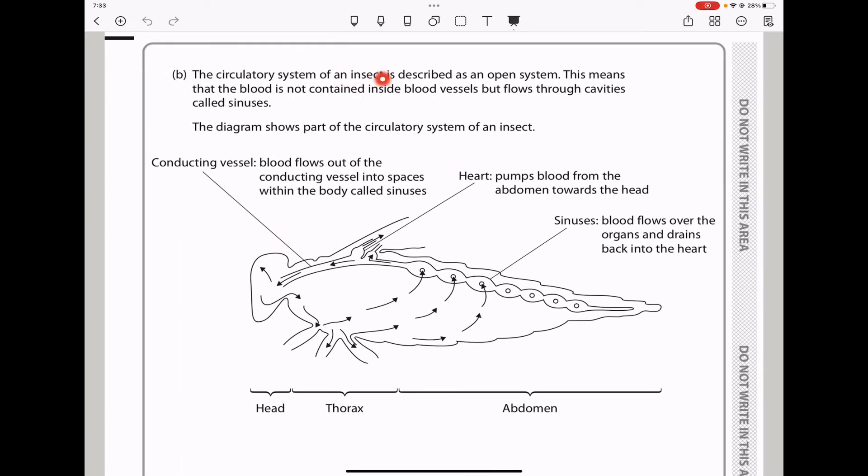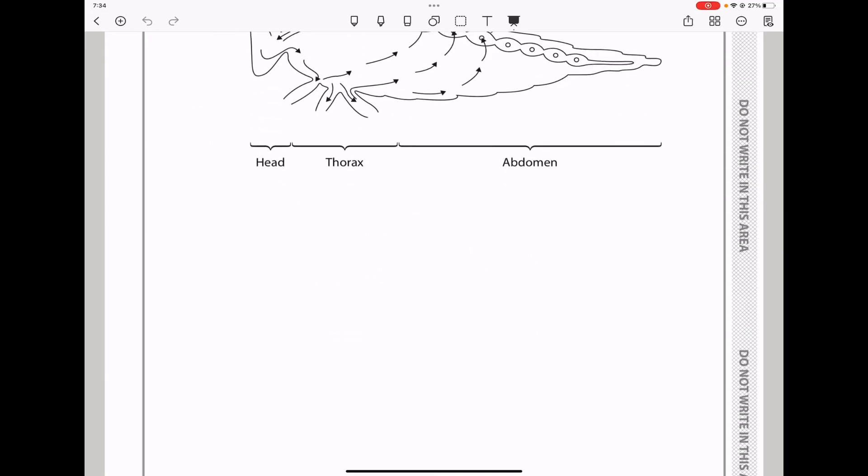Here they say the circulatory system of an insect is described as an open system. This means that the blood is not contained inside blood vessels but flows through cavities called sinuses. The diagram shows part of the circulatory system of an insect. Here they say conducting vessels, meaning blood flows out of the conducting vessels into spaces within the body called sinuses. Here we have the heart. You can see it's there. It pumps blood from the abdomen towards the head, and here we can see the blood flows over the organs and drains back into the heart. Here we have the head, we have the thorax, and we have the abdomen. That is the whole length of the whole insect.